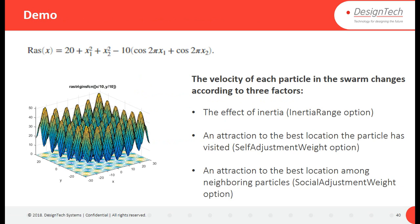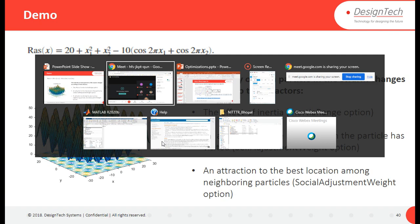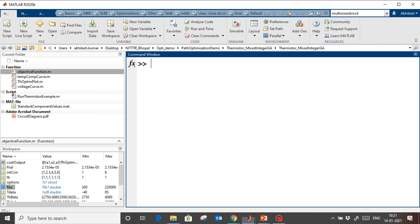In MATLAB we use particle swarm with lower bound, upper bound, number of variables, and the objective function to optimize — same as we did in the Genetic Algorithm. In this case we are going to use the Rastrigin function, which has multiple local and global minima. We know that the global minimum is at x1 equals zero, x2 equals zero, and the global minimum value is also zero.